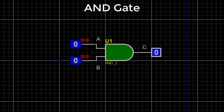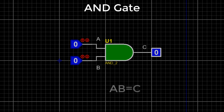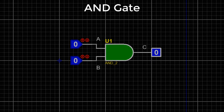We can say it multiplies all its inputs. A dot is used to show the AND operation — for example, A·B. Bear in mind that this dot is sometimes omitted and written as just AB. See its symbol and truth table to understand easily. We will explain it using two inputs A and B, but practically it can be more than two.